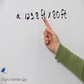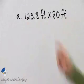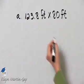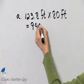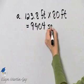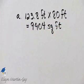123.8 feet multiply that by 80 feet. I'll let you multiply, but once you multiply, you'll have 9,904 and that is square feet. That is the area of her lawn.